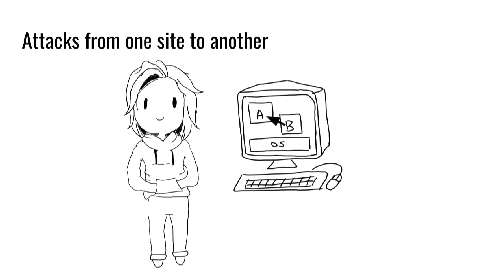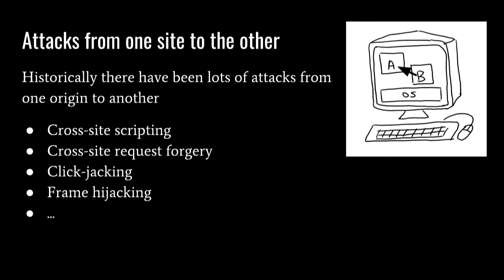Now let's look at attacks where one site — site B — attacks site A, while you're browsing both on your computer. How can browsers protect against these? These are attacks against the same origin policy, where a website of one origin like example.com is trying to access another origin like evil.com, because you're viewing both in your browser. Historically there have been a lot of these kinds of attacks, such as cross-site scripting, clickjacking, and frame hijacking — all attacks where one thing is trying to attack another.